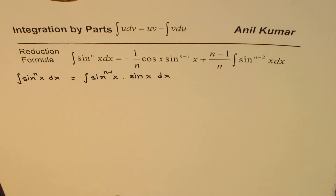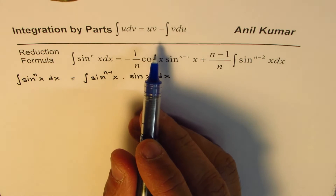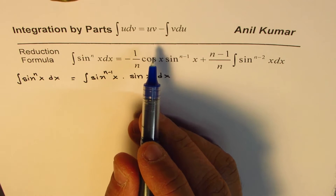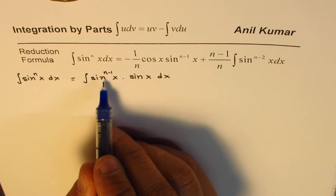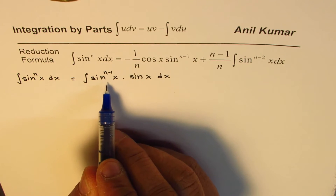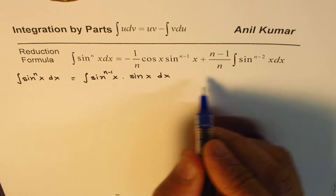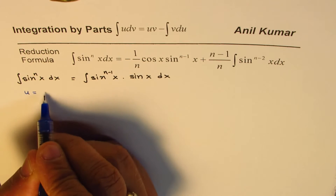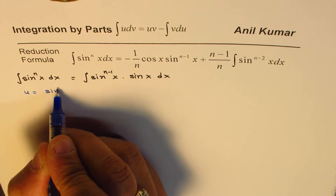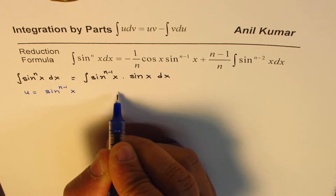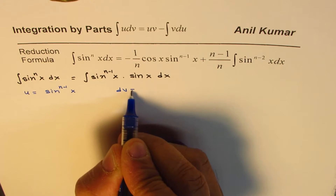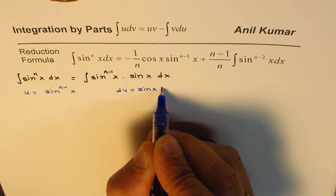One of them will be u and the other will be dv. Accordingly we will apply the integration by parts formula. We should select sine to the power of n minus 1 of x as u, since we want simpler derivatives. So let u equal sine to the power of n minus 1 of x, and let dv equal sine x dx.